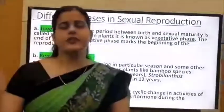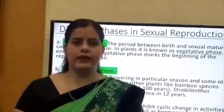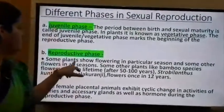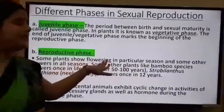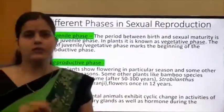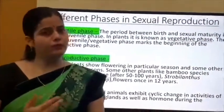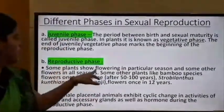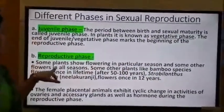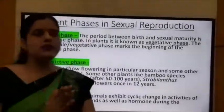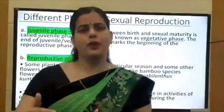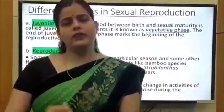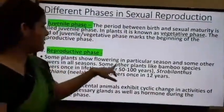The reproductive phase is the phase in which reproductive organs are fully developed and organisms are capable of producing offspring. Some plants show flowering in a particular season and some flower in all seasons, meaning the reproductive phase varies from organism to organism.